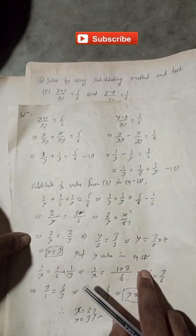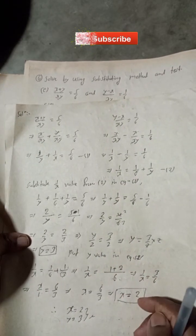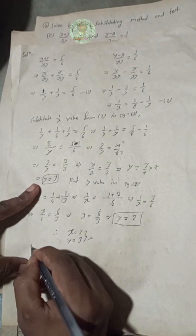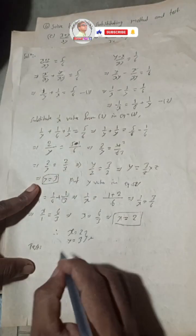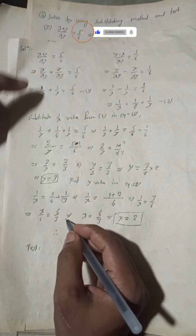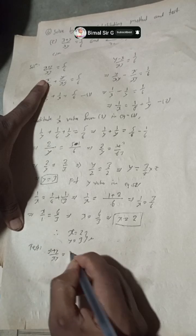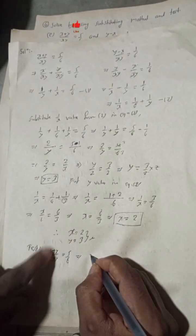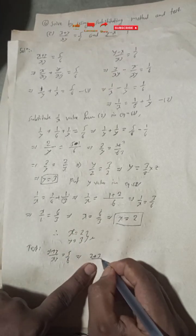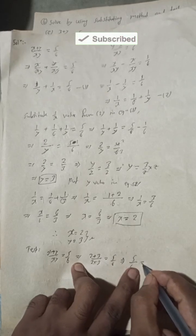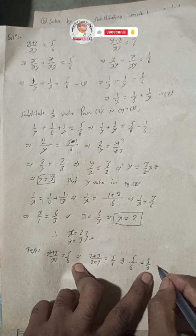Let's verify: for the first equation, (x + y) / xy = 5/6. Putting x = 2 and y = 3: (2 + 3) / (2 × 3) = 5/6, which equals 5/6. This is true.